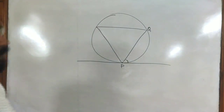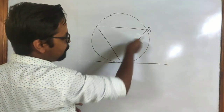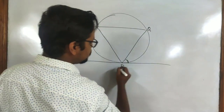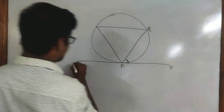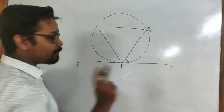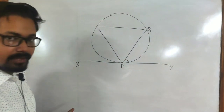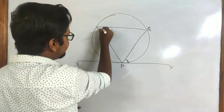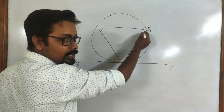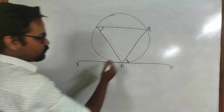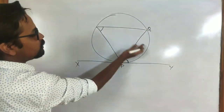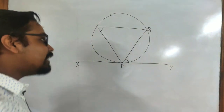So here we have chord PQ forming an angle with the tangent XY. Angle QPY is the angle formed by the chord with the tangent. This angle will be equal to the angle formed by the chord in the opposite segment — that angle is on the other side of the chord.